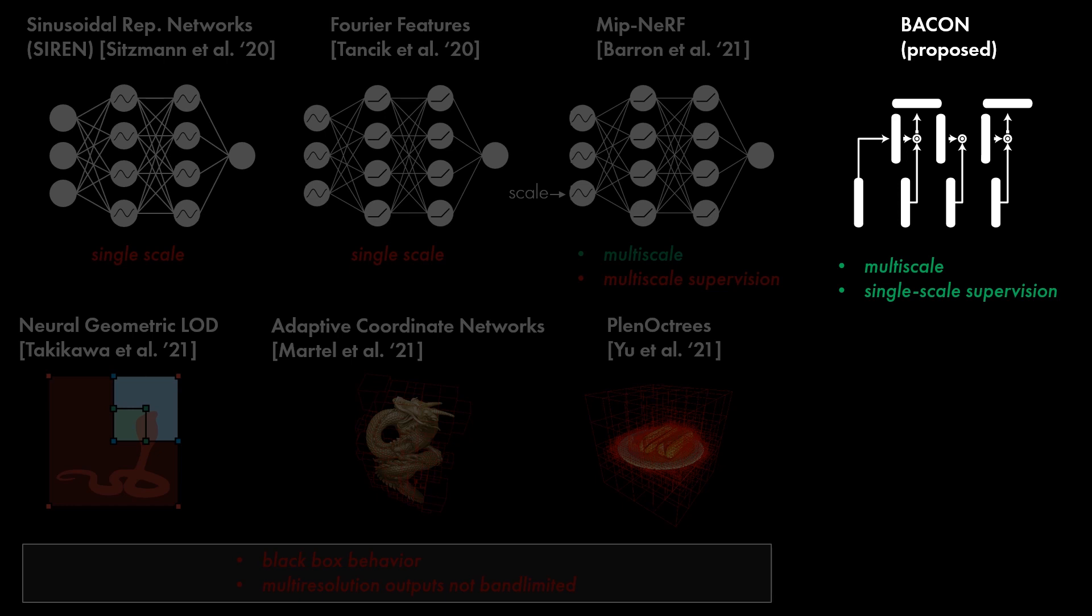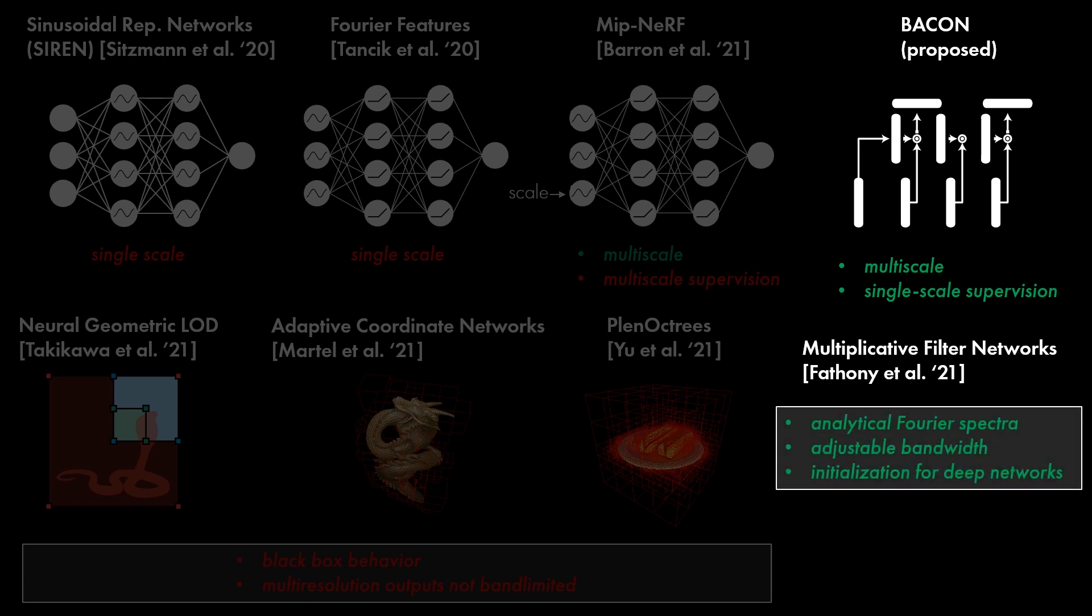Rather than using a conventional fully-connected network architecture, BACON builds on recently proposed Multiplicative Filter Networks, or MFNs, which interleave linear layers and Hadamard products between sine activations. We develop the theory of MFNs significantly, with new tools to describe and manipulate the Fourier spectra of these networks and a new initialization scheme that allows training deep networks.